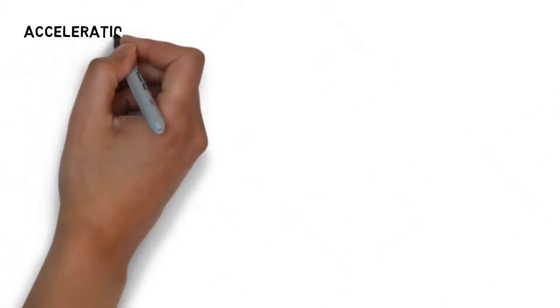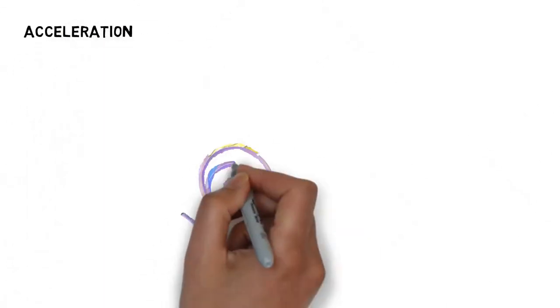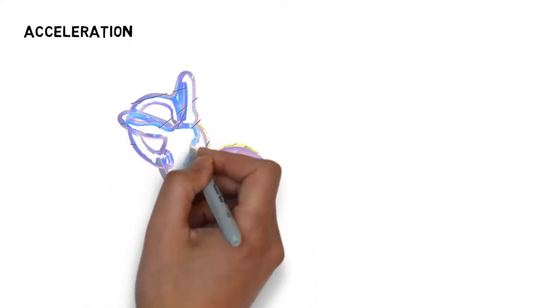This is a video on acceleration. Our brains can determine translational movement through the autoliths in the utricle.